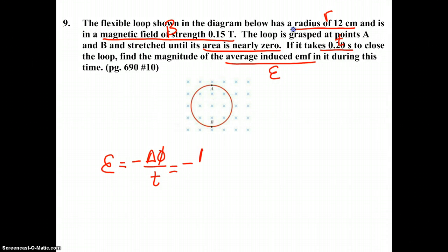So our equation becomes negative B times delta A over T. Substituting in our values: negative B, 0.15, change in area, final minus initial. It tells us the final area is nearly zero, and the initial area is going to be the area of that circle, so pi times radius 0.12 meters squared, and that change in area happens at a time of 0.20 seconds.